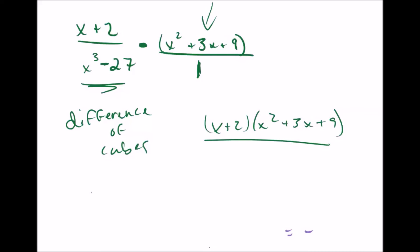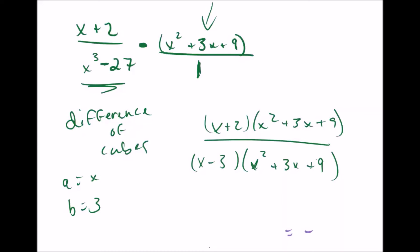The difference of cubes equation is a minus b times a squared plus ab plus b squared. Plugging in, we have a minus b as x minus 3, a is x, b is 3. Then a squared is x squared, plus ab is plus 3x, plus b squared is plus 9. In this situation, x squared plus 3x plus 9 cancels with x squared plus 3x plus 9, and we're left with x plus 2 over x minus 3.